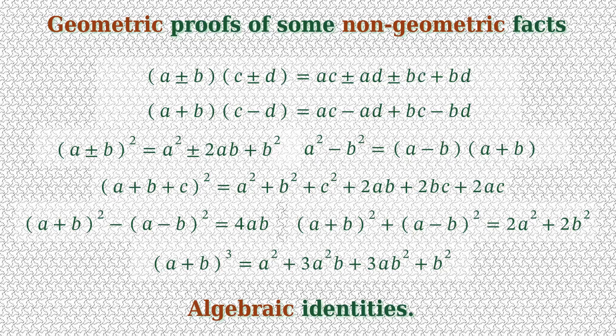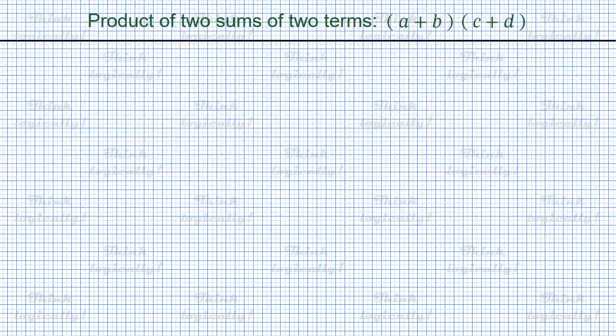This video deals with the purely geometrical proof of some perfectly well-known algebraic identities. And we start with the simplest one: a product of two sums, each having two terms in it — a plus b times c plus d.